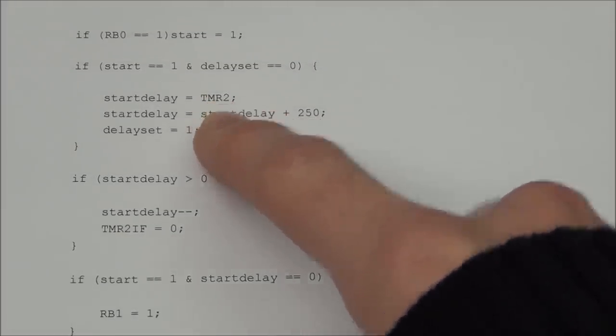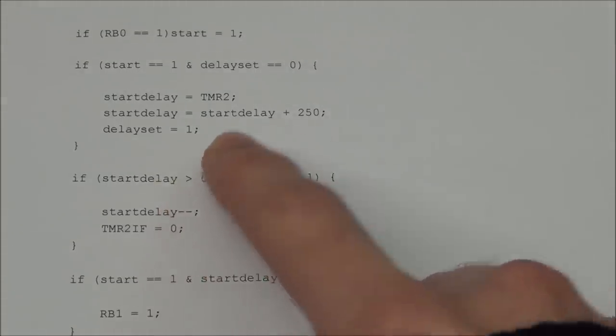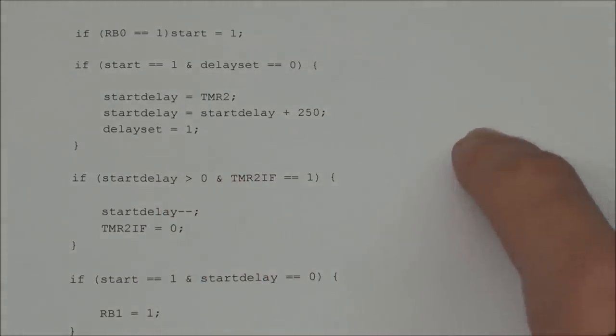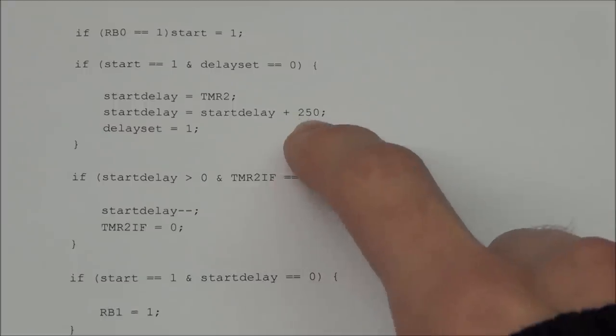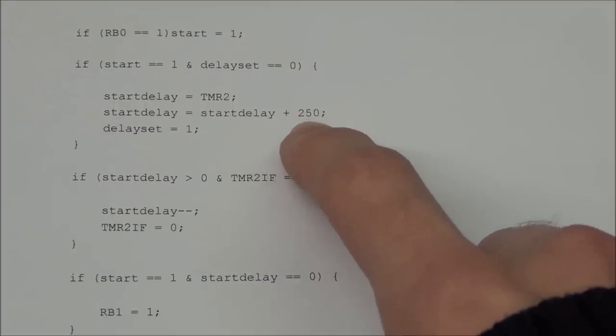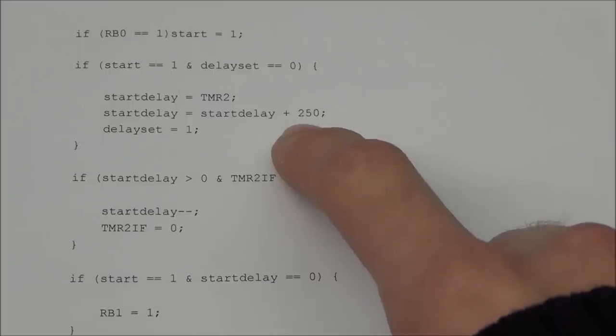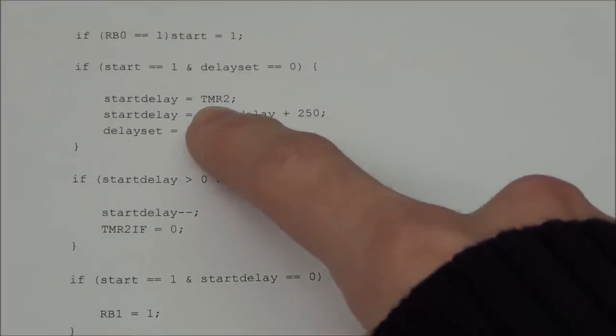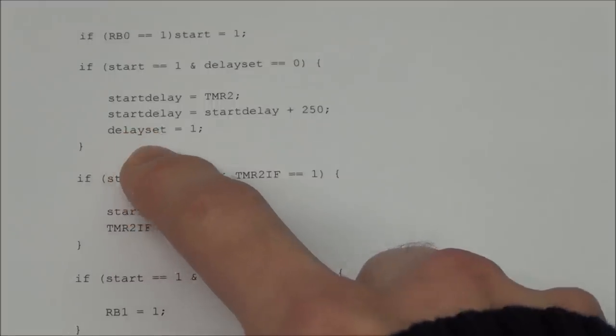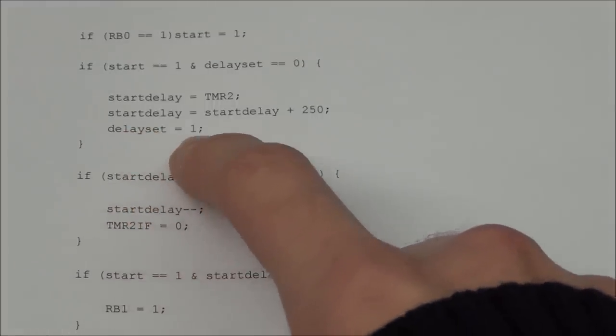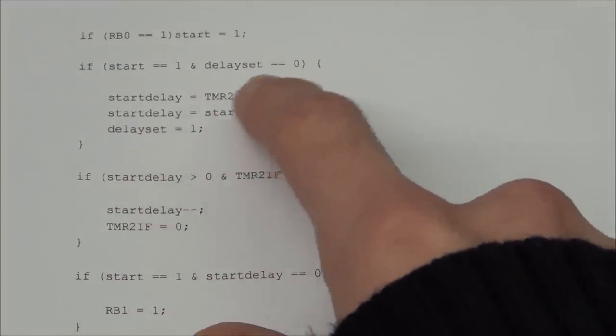And then we add 250 to the timer 2 value because this value could be near zero. And if it is then you don't have time to move your finger from the start button to your button to be ready to press when the LED lights up. So those 250 make sure that there is always a certain delay before the LED can light up. And this part up here is the random part. It will then set the delay set to 1 so it will never enter this again before the game has ended.